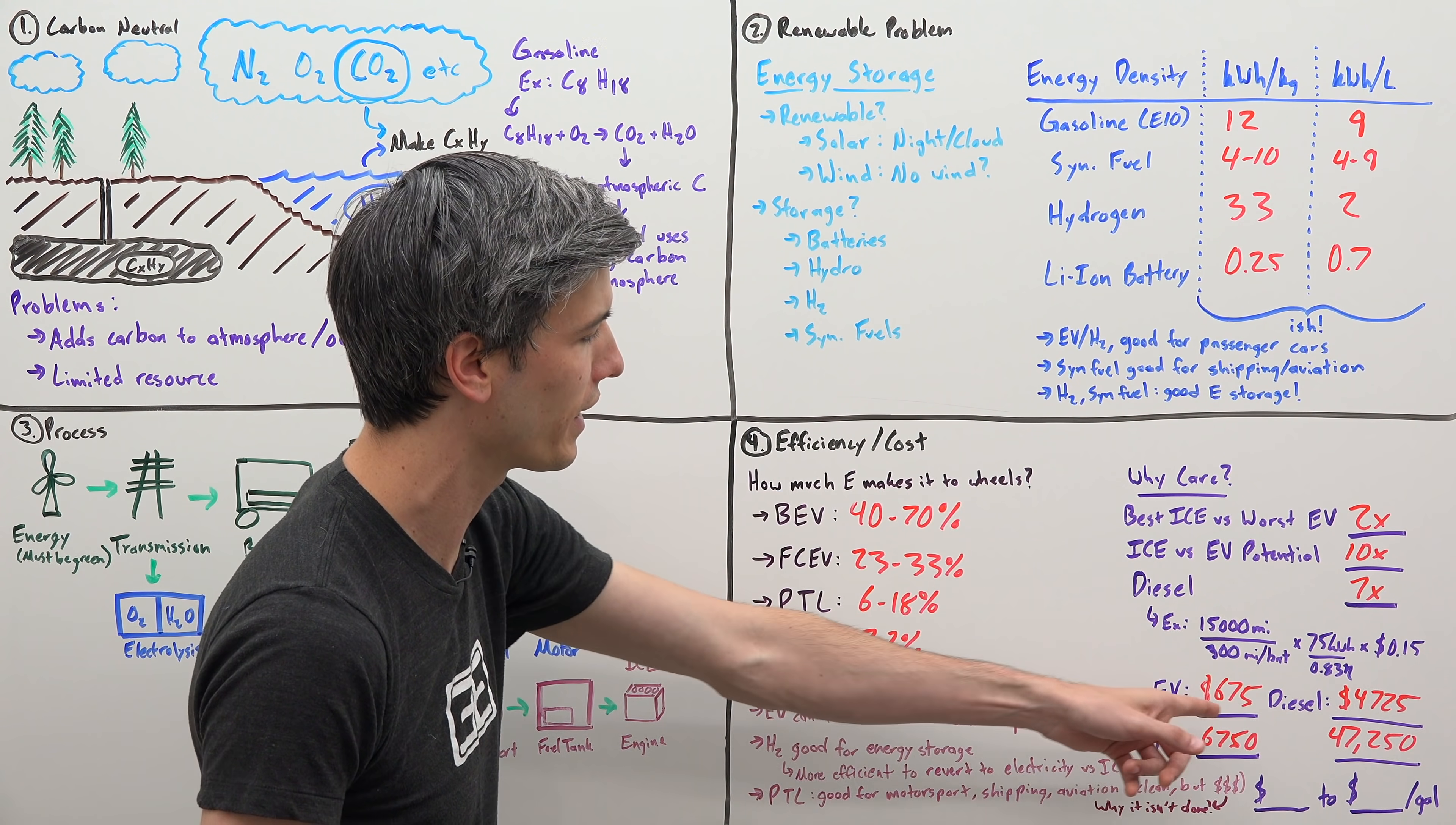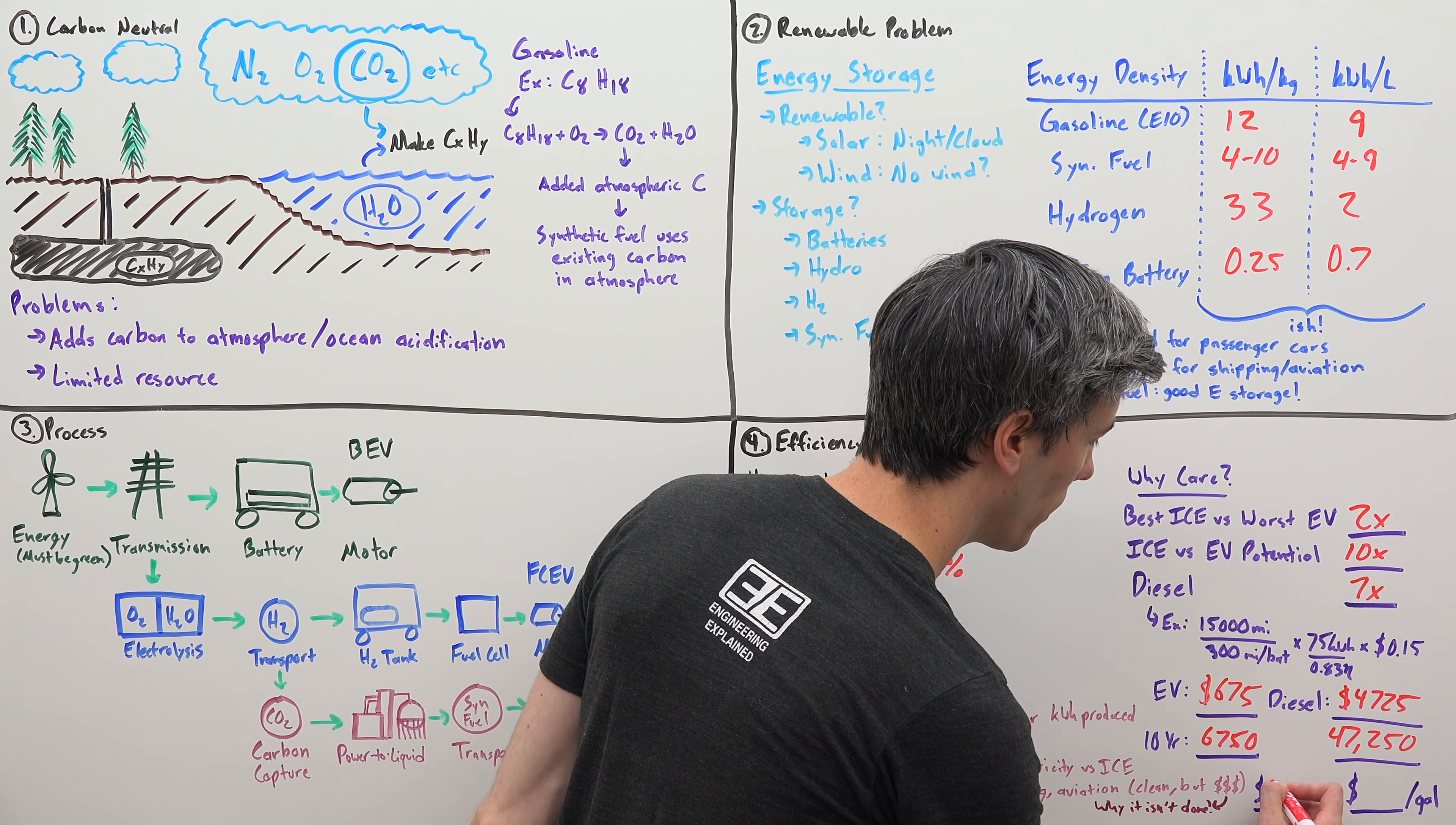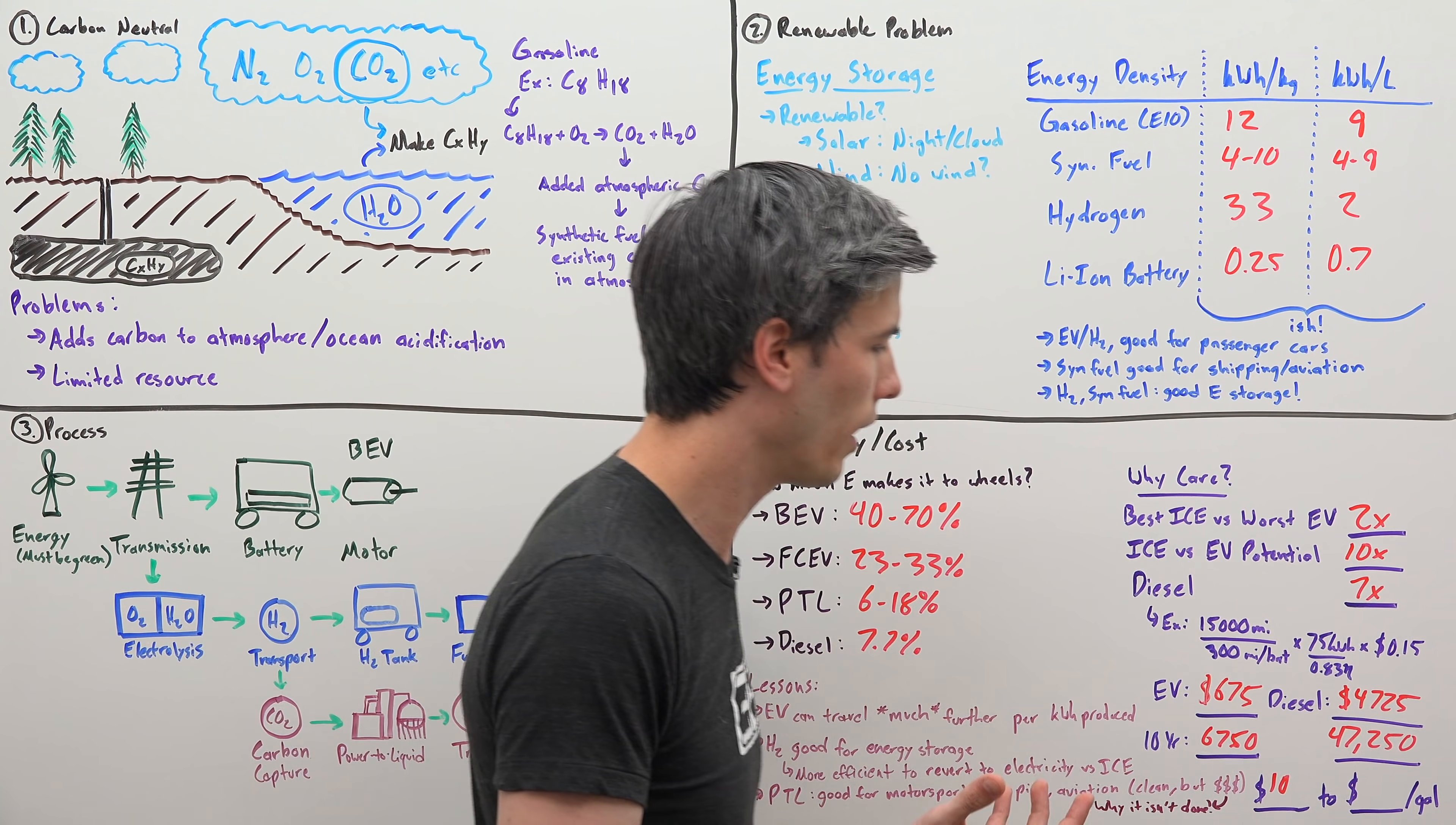If you calculate this out and you're looking at what is the price per gallon in this example of diesel fuel, it's about $10 per gallon, which is quite expensive. That's going to be the prohibitive thing of why people aren't going to be using synthetic fuels and why it's not going to be mass adopted.